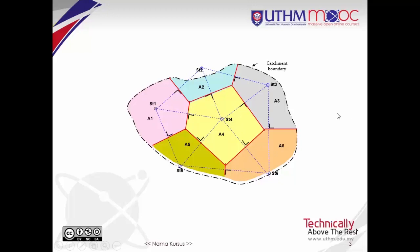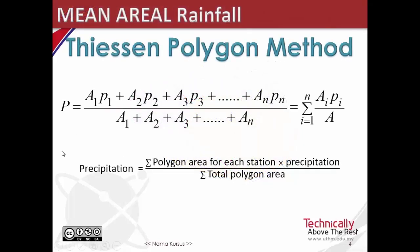The area of each polygon is then determined. The average precipitation is equal to the summation of polygon area for each station multiplied by the precipitation, divided by the summation of total polygon area.